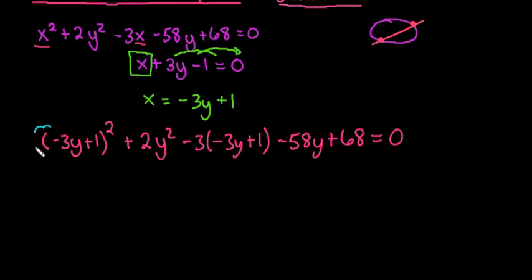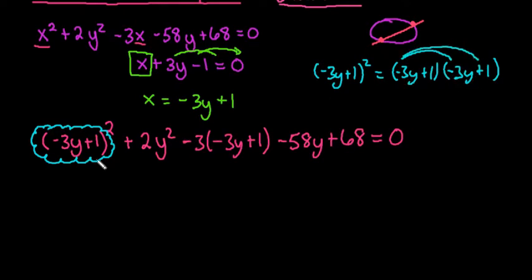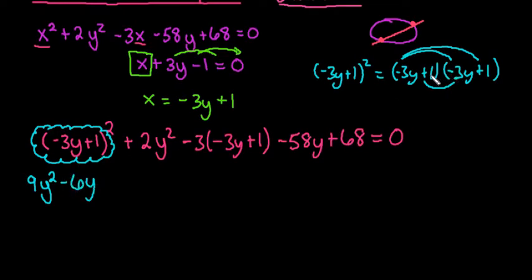Don't forget — I see the most mistakes with this part. A lot of people, when they see negative 3y plus 1 squared, want to just put 9y squared plus 1, squaring each term individually. Remember that negative 3y plus 1 squared equals negative 3y plus 1 times negative 3y plus 1. First times first gives 9y squared; the middle term is twice the product, so negative 3 times 1 gives negative 3, and we get two of those; and the last term squared gives positive 1. Don't forget that middle term — it's the biggest mistake when squaring a binomial.